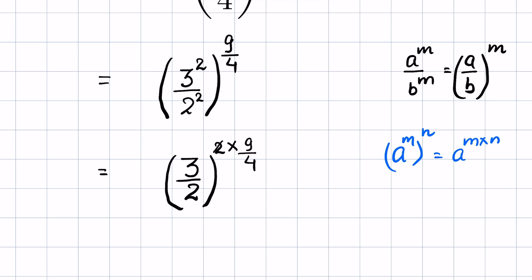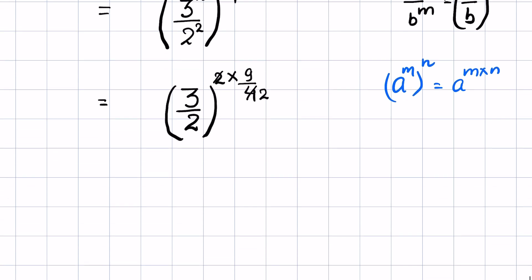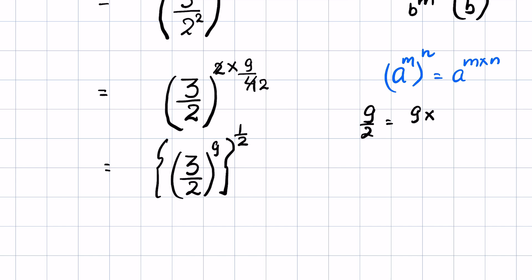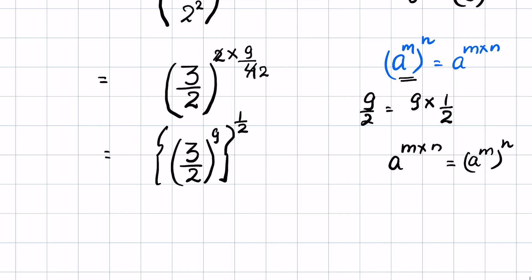This 2 and 2 we can cancel. So this is now (3 upon 2) raised to the power of 9 upon 2. We can write 9 upon 2 as 9 times 1 upon 2, and using the identity a raised to the power m times n equals a raised to the power m whole raised to the power n, we take 9 inside the bracket and 1 upon 2 outside.